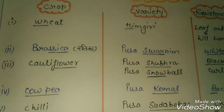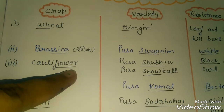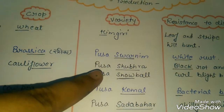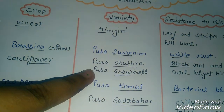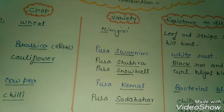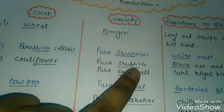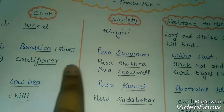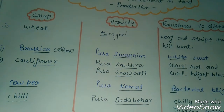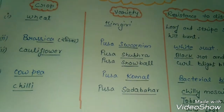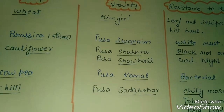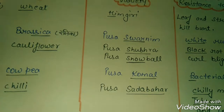Next crop is cauliflower. How do we remember it? There are two varieties: Pusa Shubhra and Pusa Snowball. This is a very easy trick — when something is a good occasion, we give flowers. Here the flower is a snow flower, meaning Pusa Snowball. So you can remember Pusa Shubhra and Pusa Snowball for cauliflower.